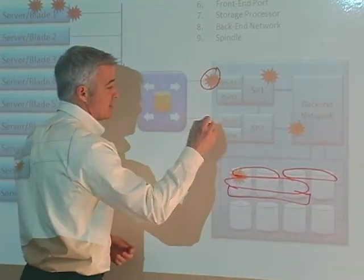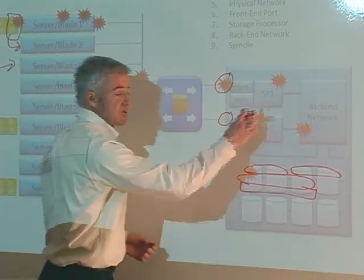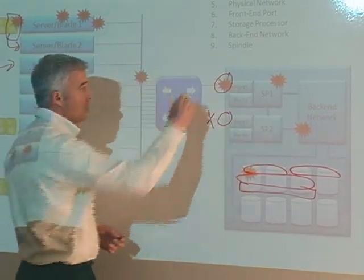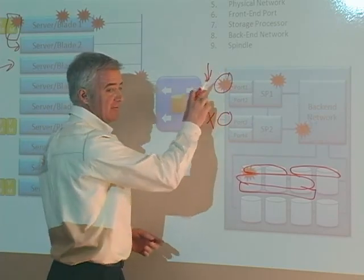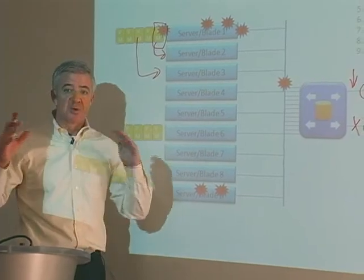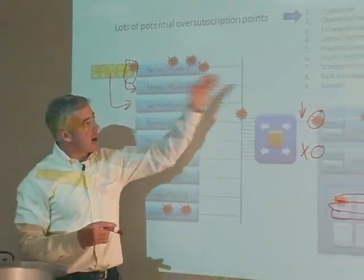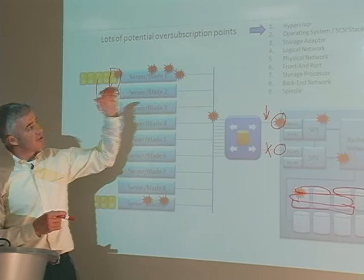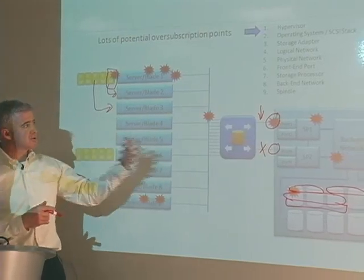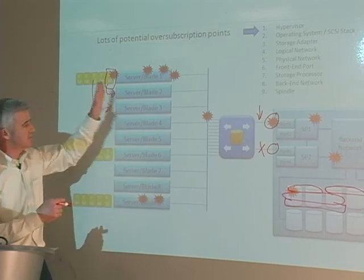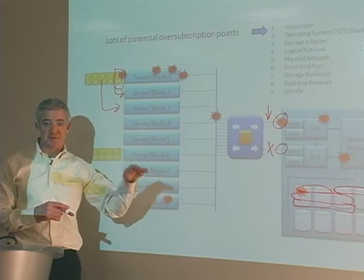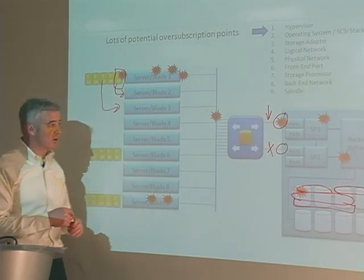Connectivity points — we can have multiple connectivity points into our storage processors. However, if we have a path failure, we can increase the workload on an individual one, which will negatively impact performance. So keep in mind that the hypervisor itself, the operating system and SCSI stack, the storage adapter, the logical adapter, the physical network, the front-end port, the storage processor, the back-end port, and the spindle — all of these areas highlighted in red are our potential over-subscription points, and we have some flexibility to work around that.